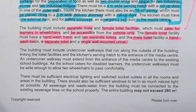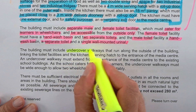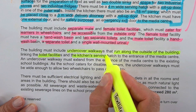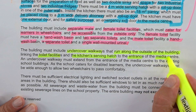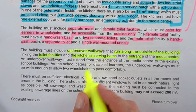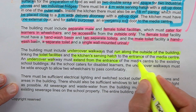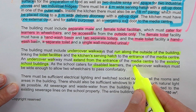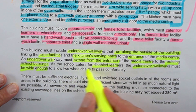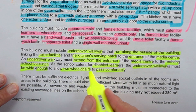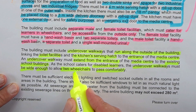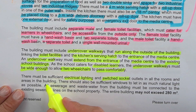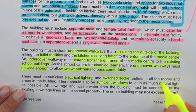The building must include undercover walkways that run along the outside of the building, linking the toilet facilities and the kitchen serving hatch to the entrance of the media center. The walkway must also extend from the media center entrance to the existing school buildings. Since the school caters for disabled learners, the undercover walkway must be wide enough to allow two wheelchairs to pass comfortably. There must also be sufficient electrical lighting, switch sockets, and outlets in all rooms, with sufficient windows to allow in as much natural light as possible.